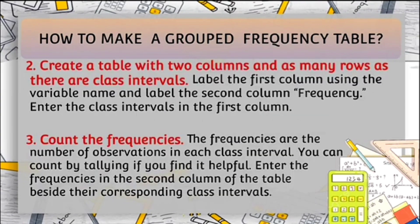The second step in making a grouped frequency table is to create a table with two columns and as many rows as there are class intervals. Label the first column using the variable name and label the second column 'frequency.' Enter the class intervals in the first column. The third step is to count the frequencies — the number of observations in each class interval. You can count by tallying if helpful. Enter the frequencies in the second column beside their corresponding class intervals.